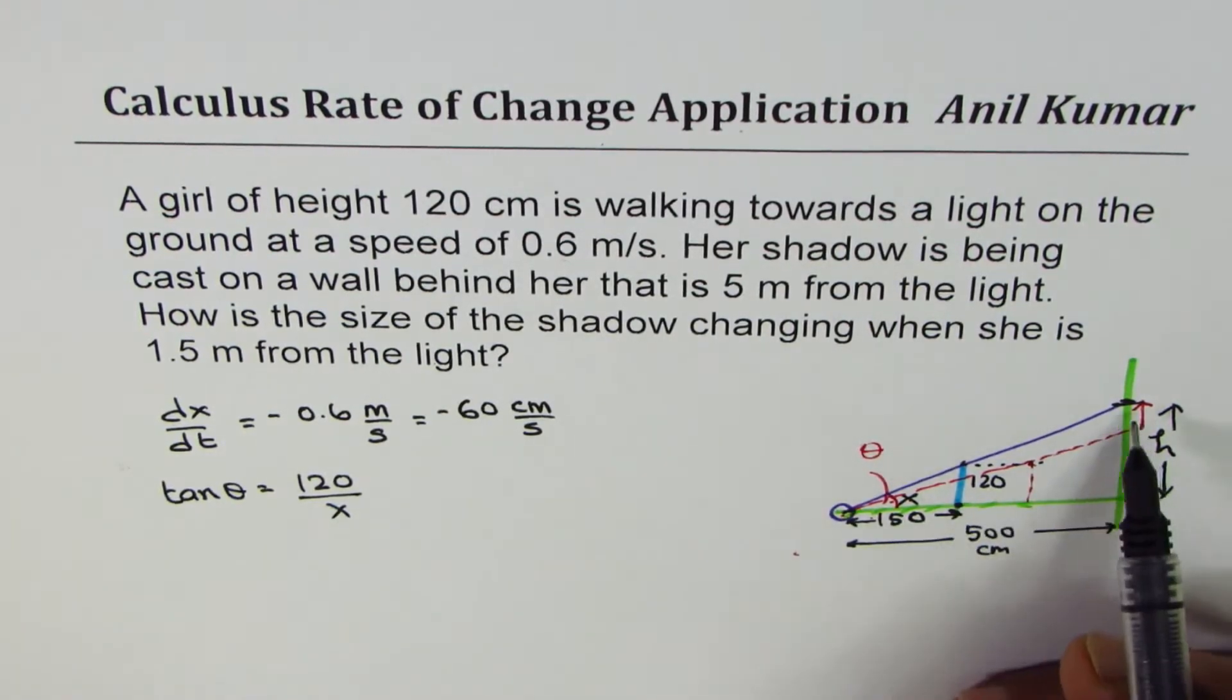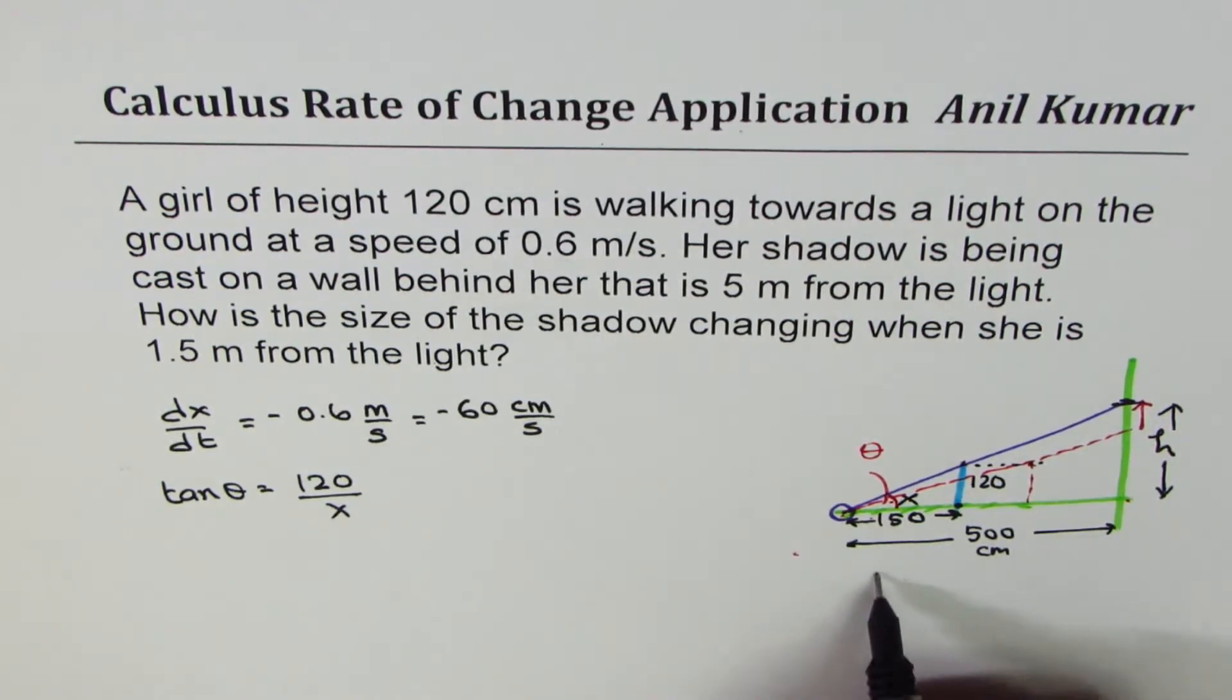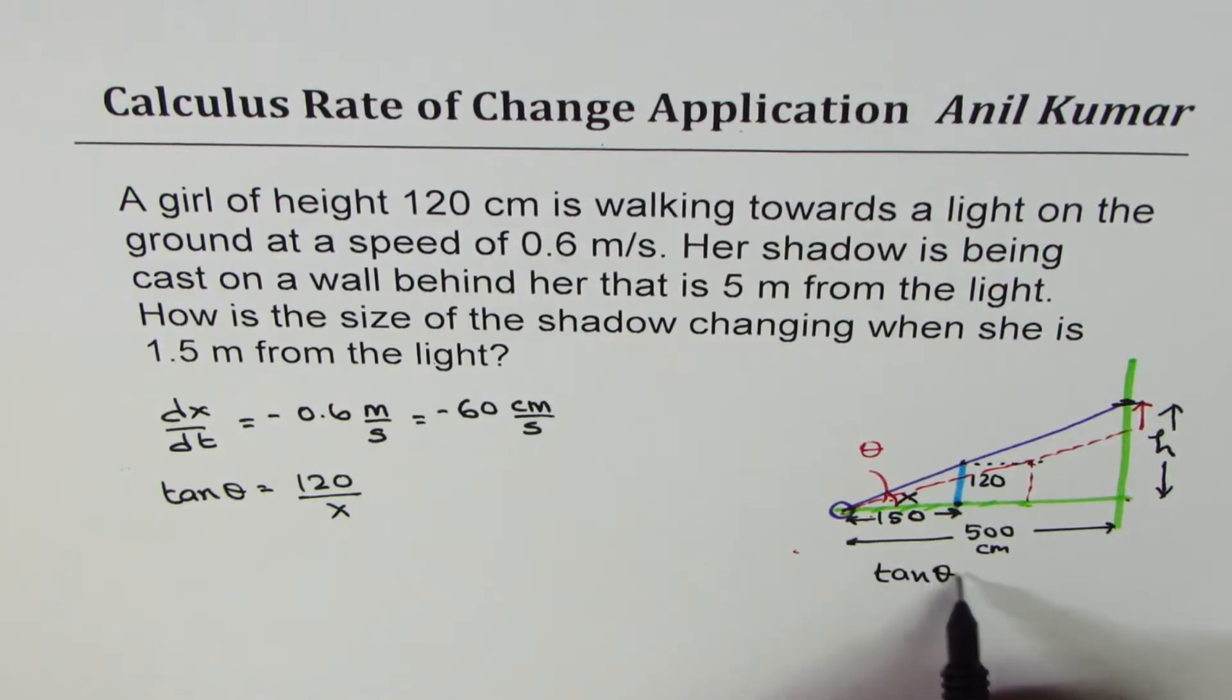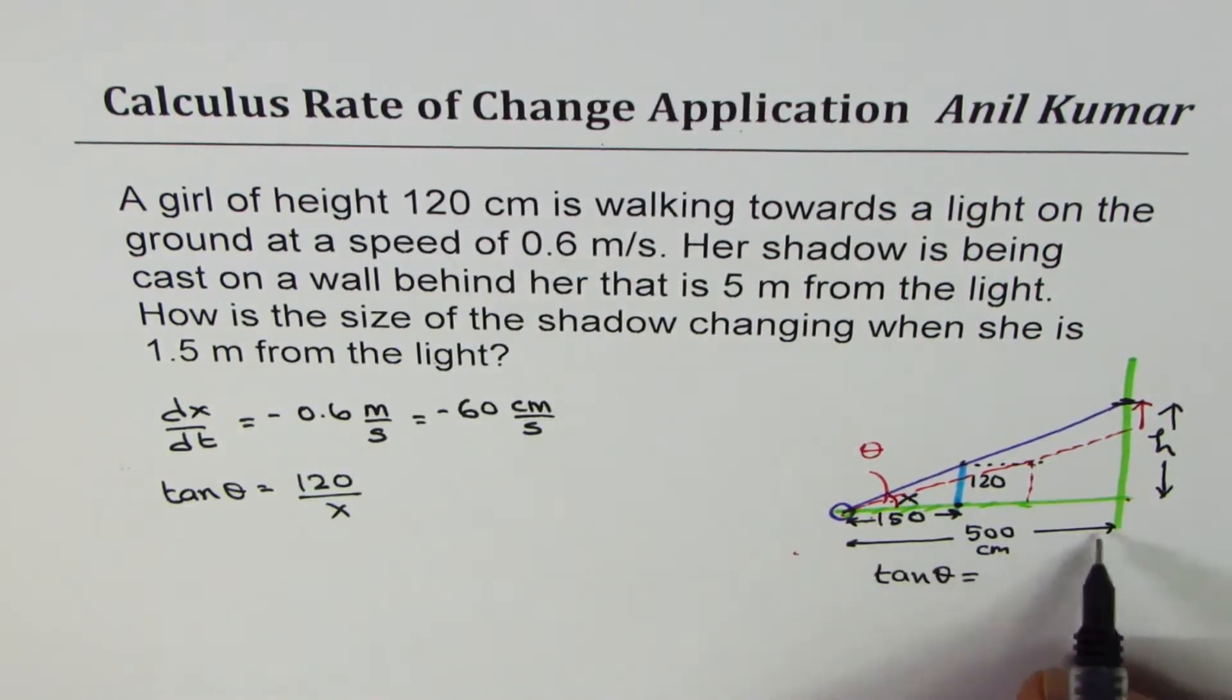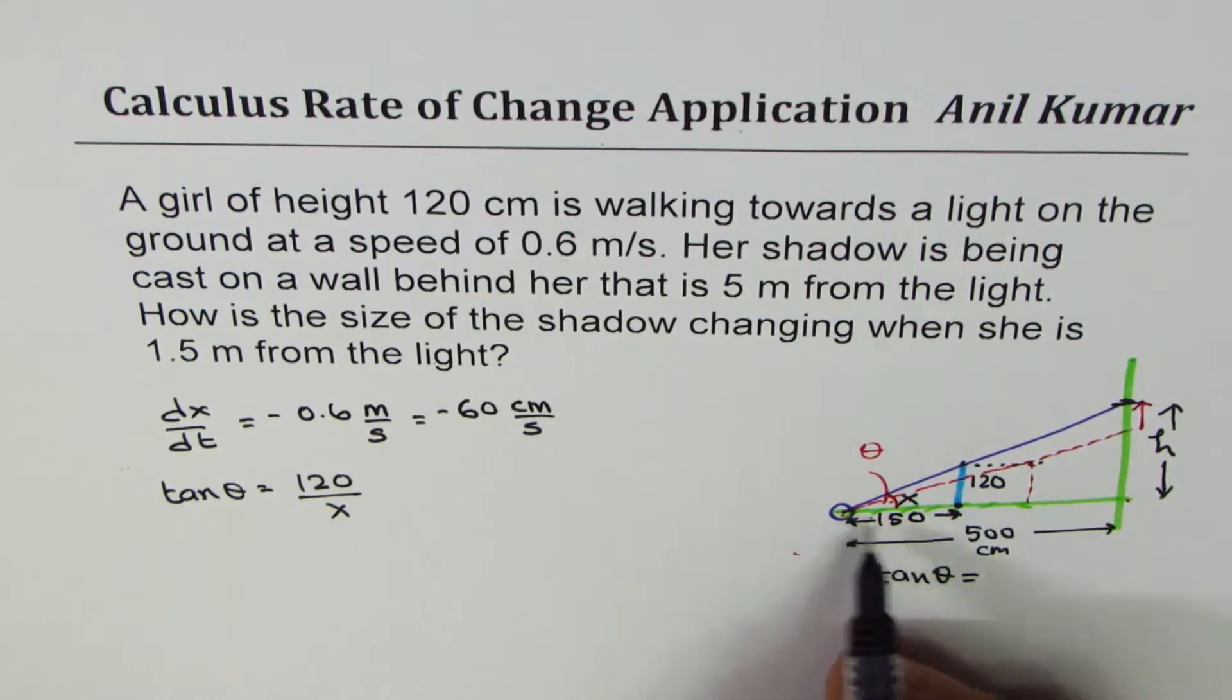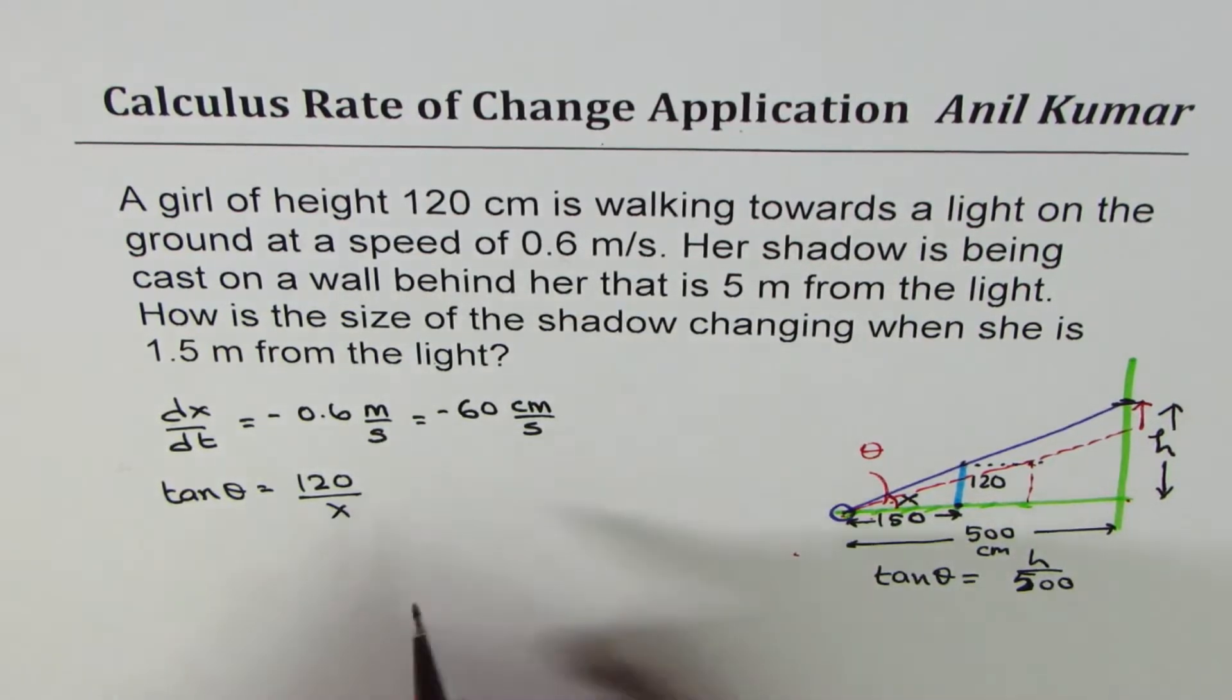On the other hand, we have another situation which relates h. So h is changing with the angle. So the other situation here is, let me write it here, as tan theta equals to h over 500, the distance from light source to the wall. So h over 500. So we will work with these two equations.